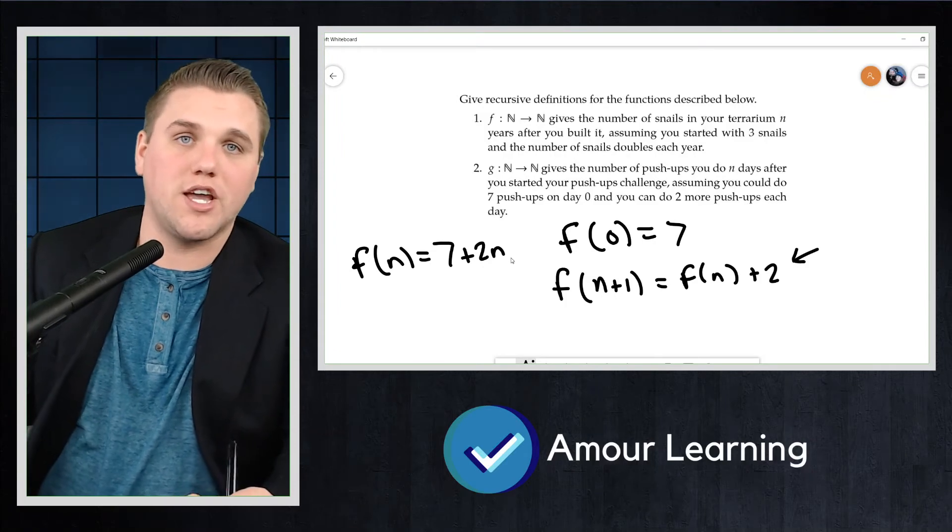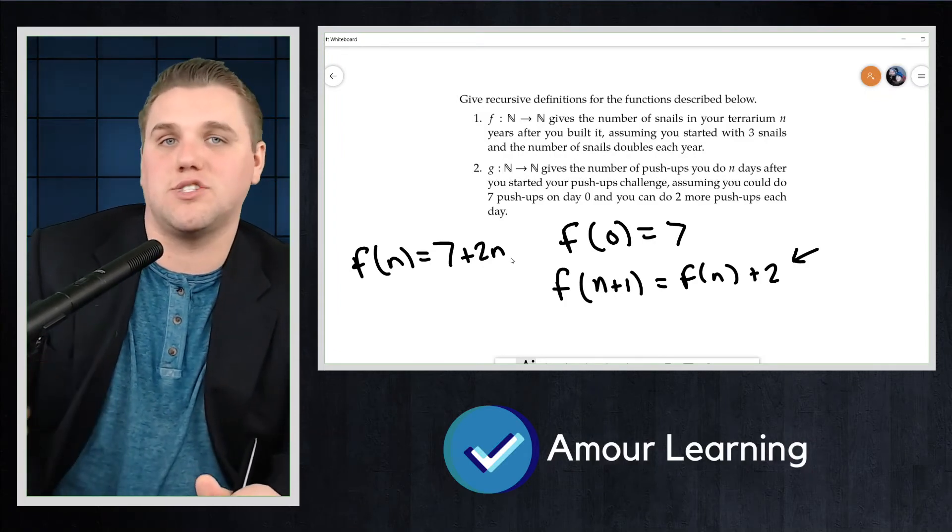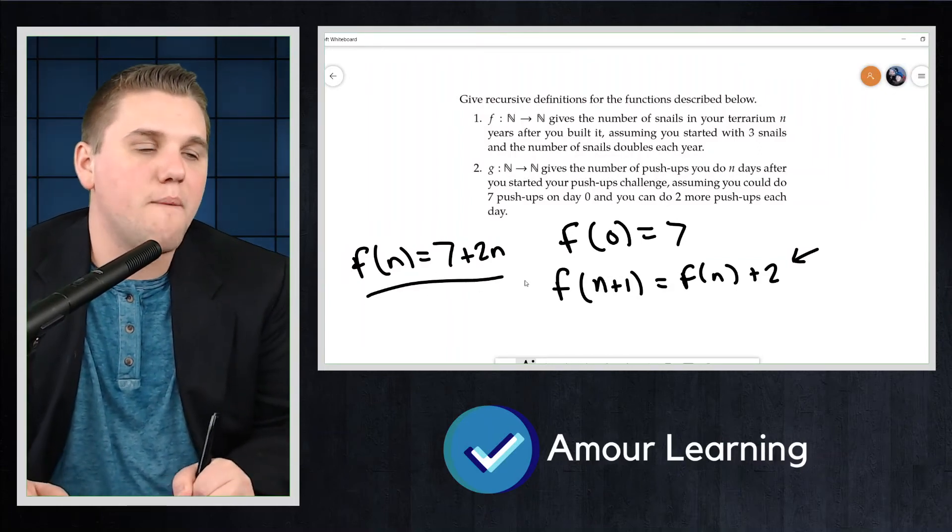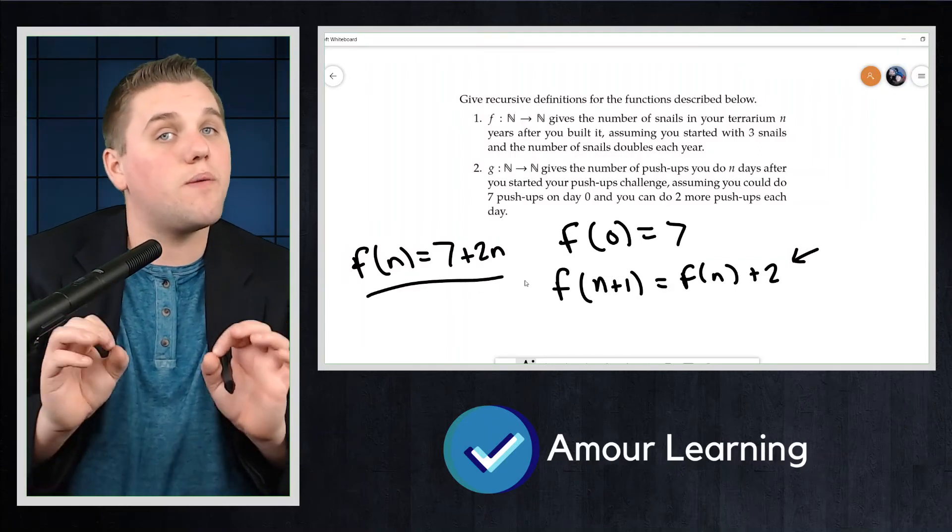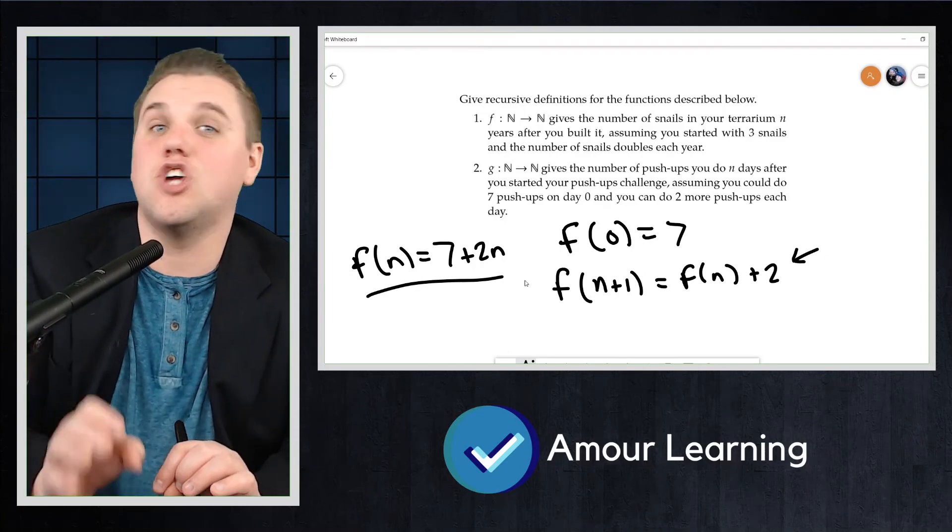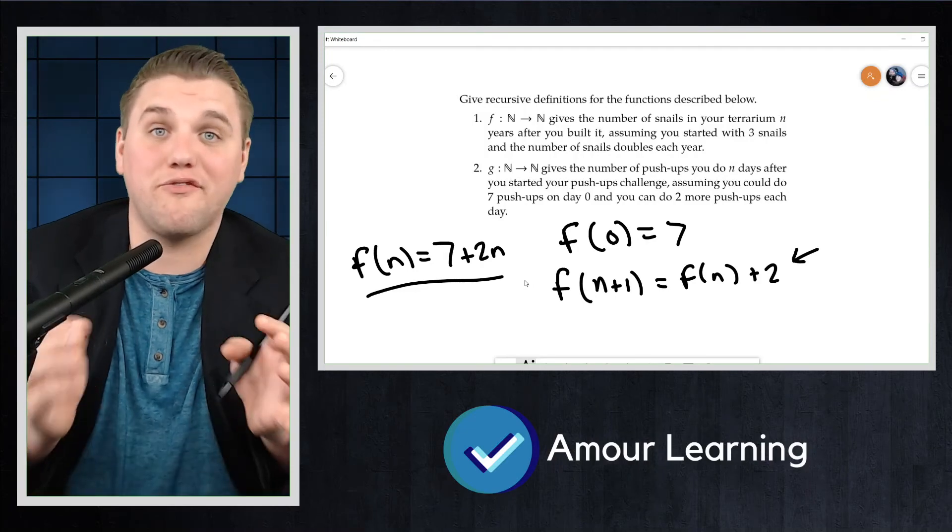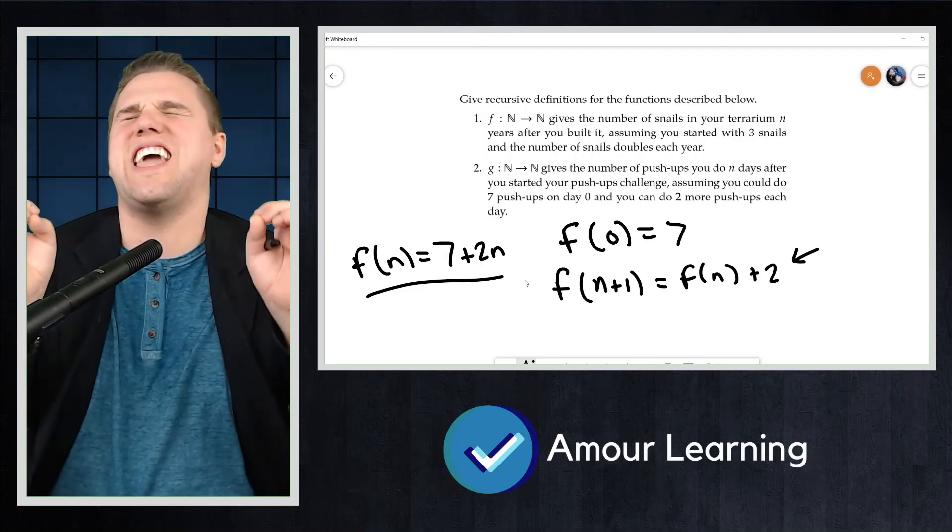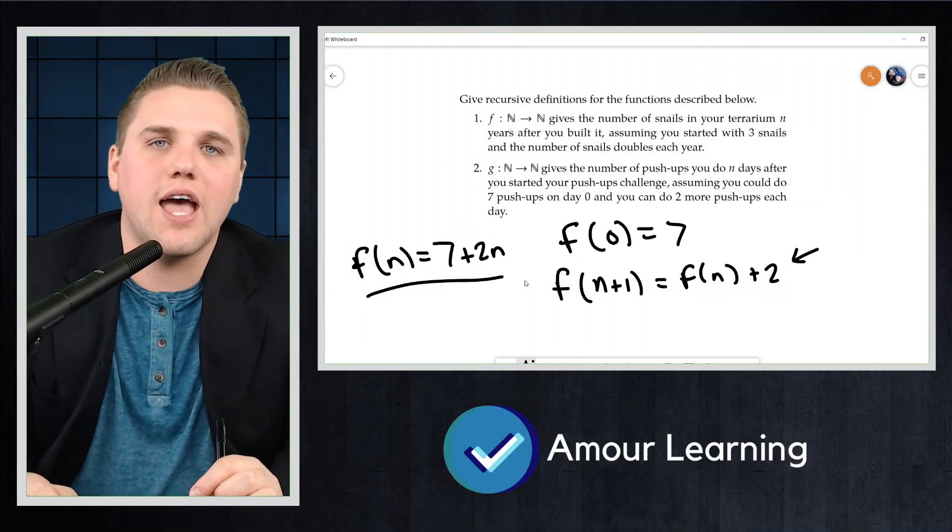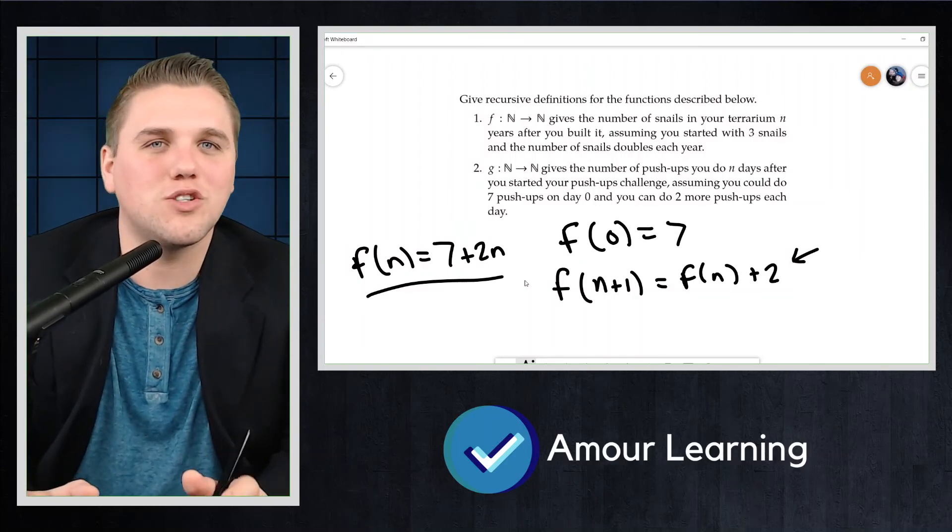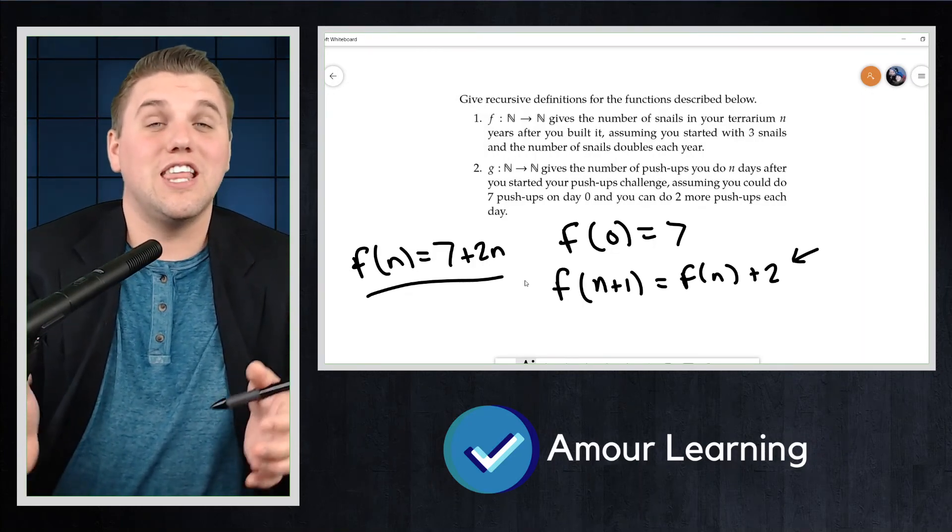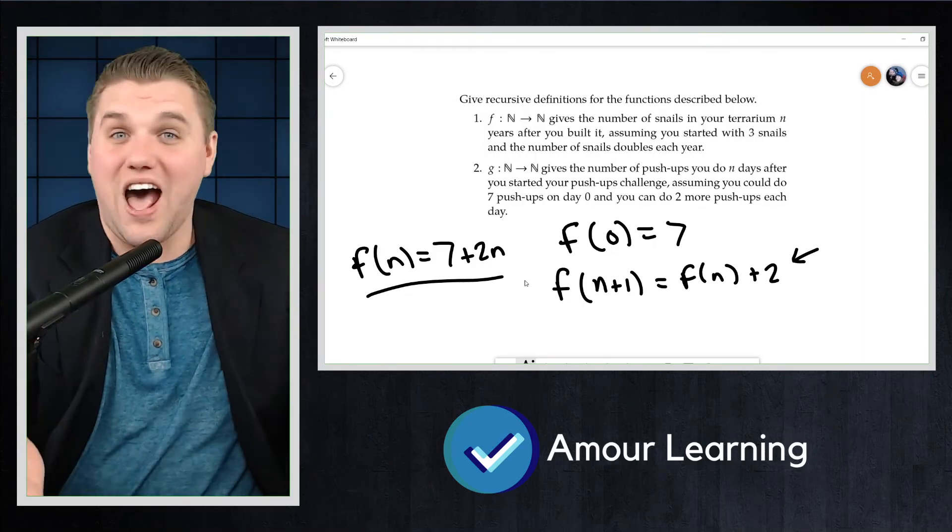If I wanted to figure out how many push-ups I could do after 100 days, it would be 7 plus 2 times 100, which is 207. This is a lot more preferable. But keep in mind, this is so important, most recurrence relations don't have a closed formula. You can't find a closed formula, or at least it's incredibly challenging to do so. And so for that reason, closed formulas are not extremely useful in the real world because they're not all that common.